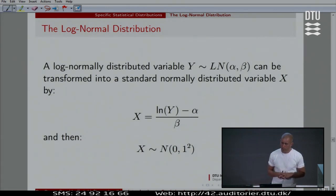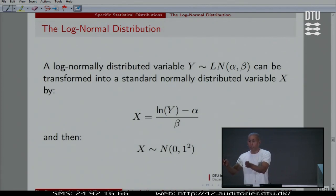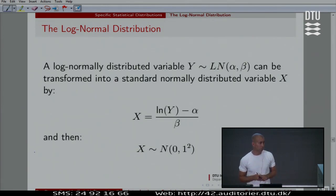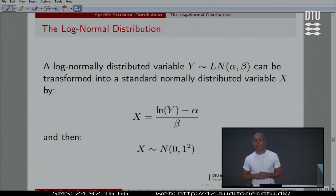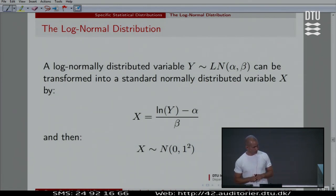The key feature of the log-normal is this: something which has a log-normal distribution — so we are talking about positive numbers with a skewed distribution — if you apply the log to it, what comes out of this nonlinear transformation is a normal distribution. That's another way of defining what a log-normal is: if you apply the log to it, it becomes normal.